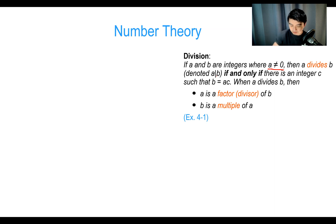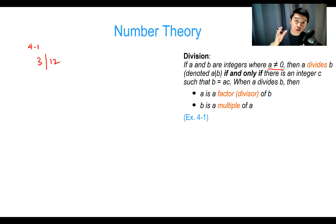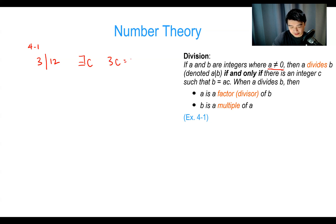Let's give a quick example. We can say three divides 12, written 3 | 12. This means there exists an integer C so that 3 times C equals 12. There is such a number — that number is 4 — so this is a true statement. It is true that three divides 12.